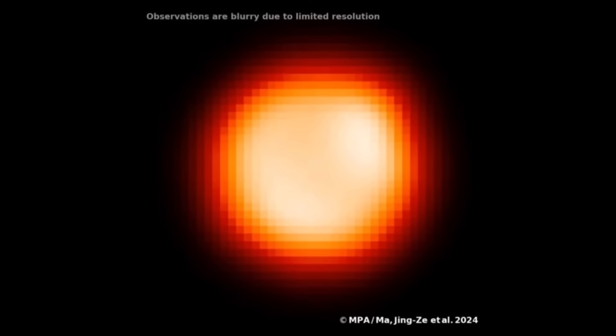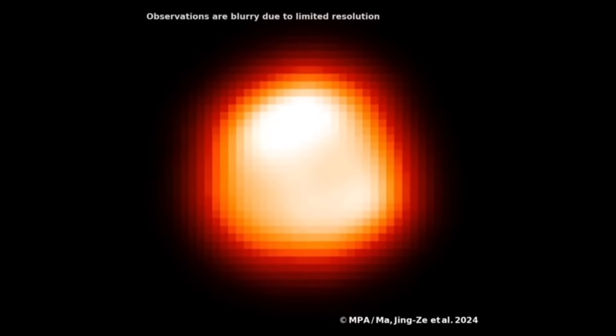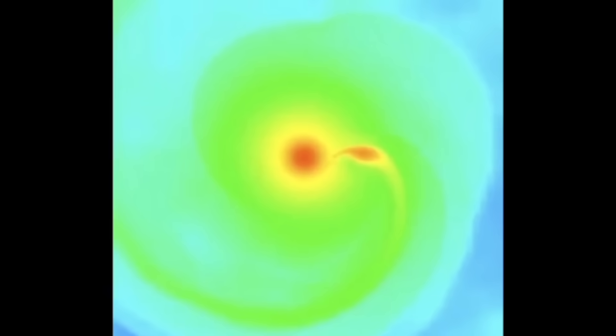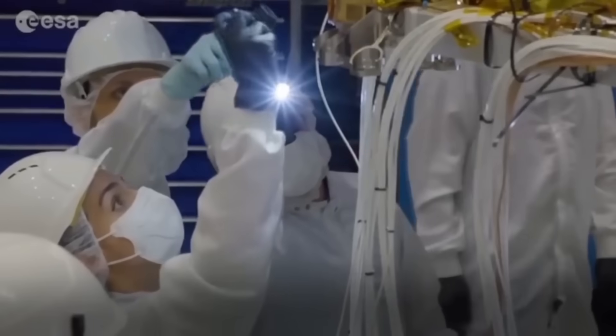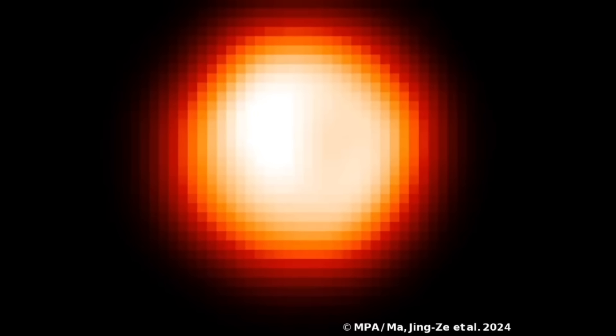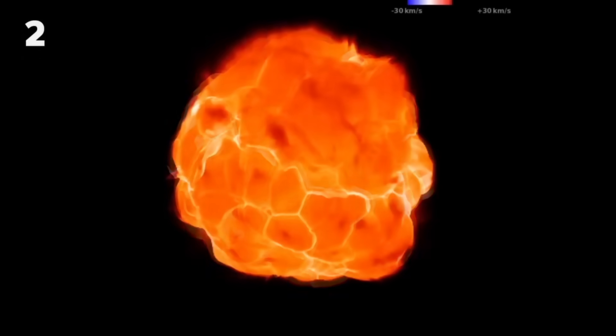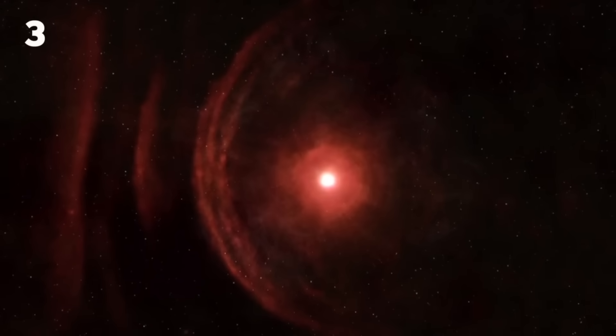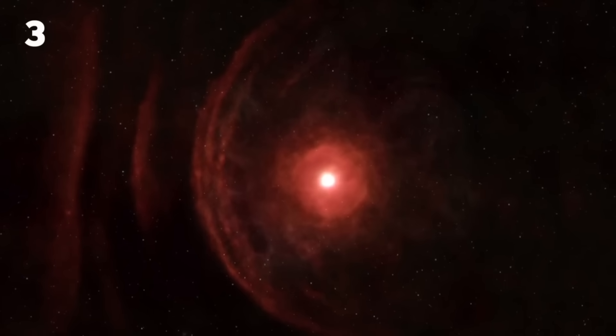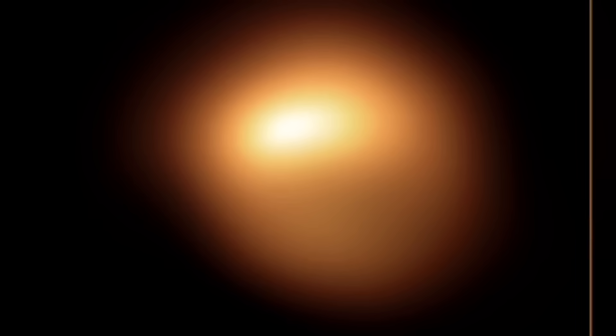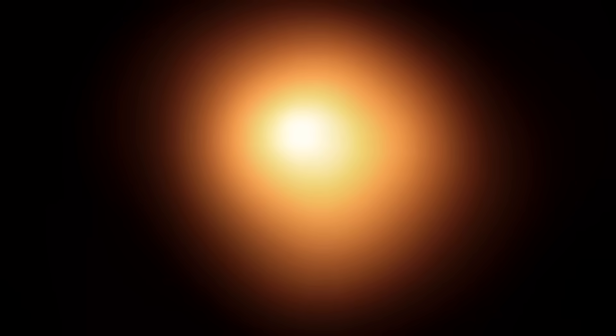Still, no one really knows when Betelgeuse will explode. For the past few years, it has continued to show strange and unusual activity that made many scientists believe the end might come sooner than expected. But the more they study it, the more surprises they find. Scientists have discovered that Betelgeuse has dimmed in three different ways over time, and each type of dimming seems to be caused by a different reason.